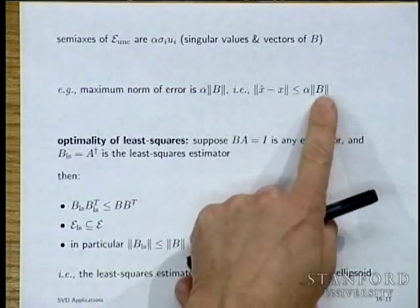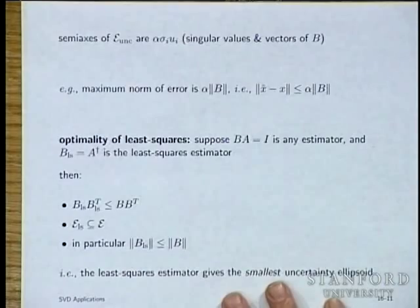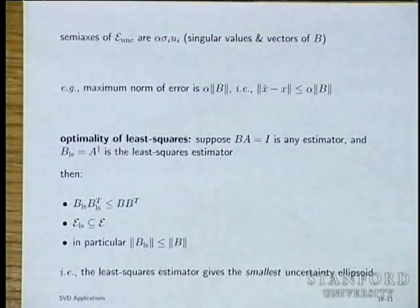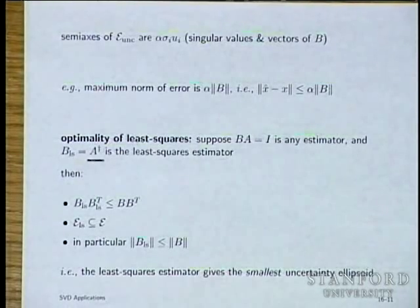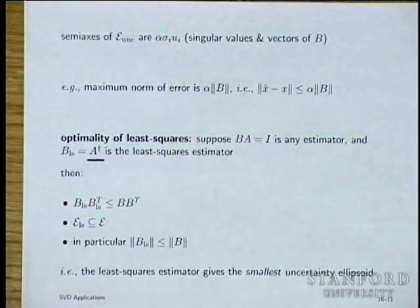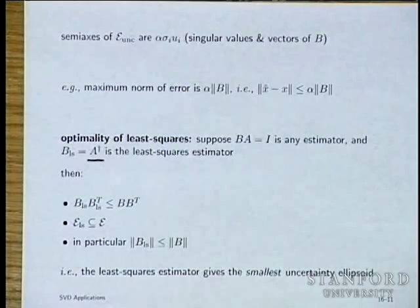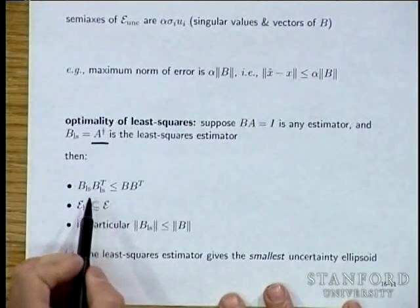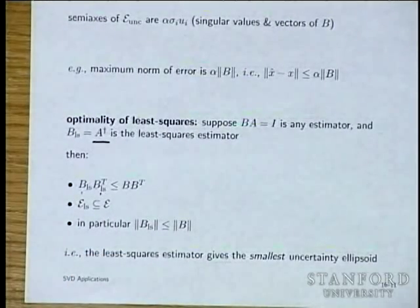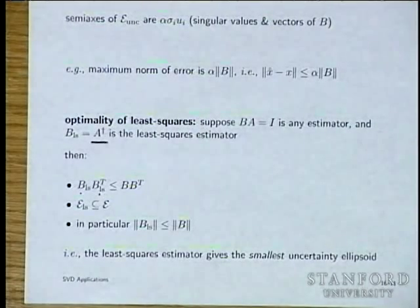The worst-case error is the norm of B. It turns out that using the least squares estimator minimizes this — B_LS B_LS^T ≤ BB^T for any left inverse B. So the least squares uncertainty ellipsoid is as small as it can possibly be. Once again, least squares is the best thing to do under this measure.